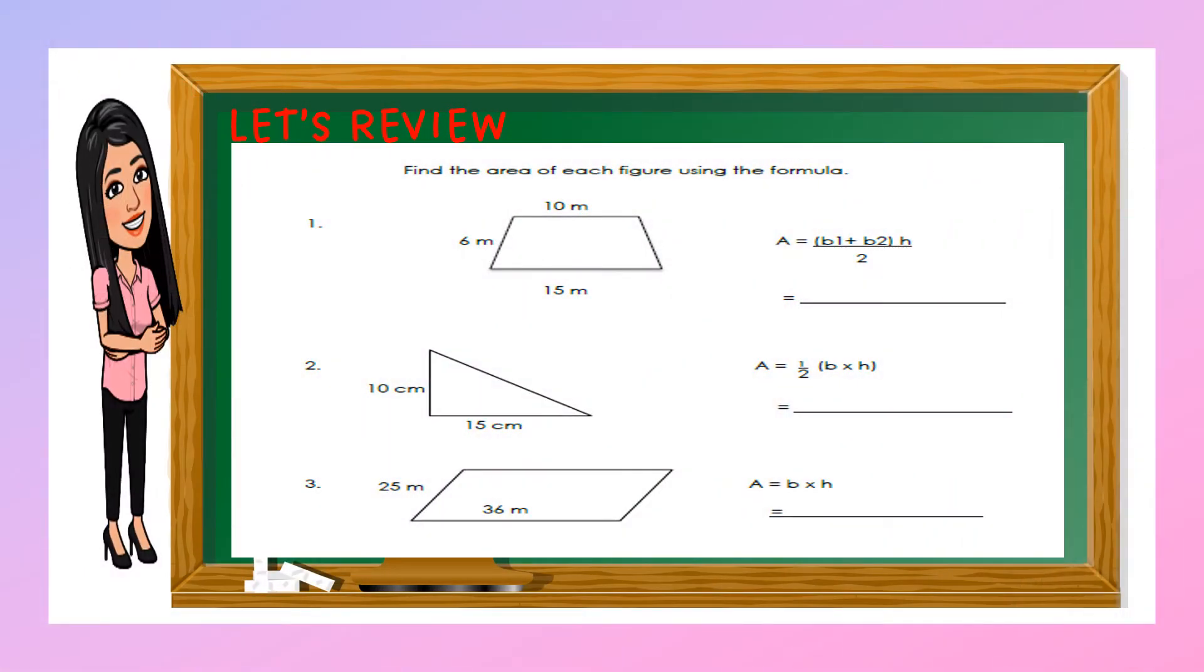Let us have a review. Find the area of each figure using the formula. The first one is a trapezoid. It has a measure of 10 meters.